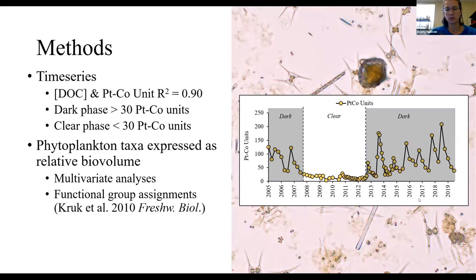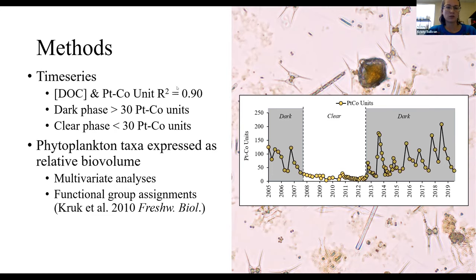For the 14-year period where we have phytoplankton data, I broke the time series up into a dark, clear, and dark phase based on changes in water color. I used platinum cobalt units as a measure of water color instead of dissolved organic carbon, because not all dissolved organic carbon is colored, though these two metrics are highly correlated. Dark phases were considered periods where water color was greater than 30 platinum cobalt units, and clear phases were less than 30 platinum cobalt units. Phytoplankton taxa were expressed as relative biovolume, and I conducted a variety of multivariate analyses and functional group analyses.